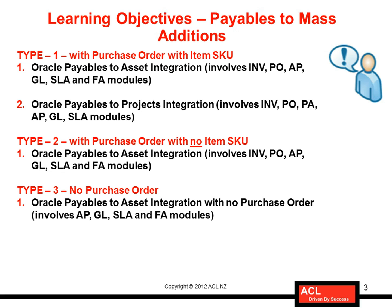The third type of flow is wherein you don't have a purchase order at all. For instance, this could be circumstances where an asset has been acquired without a purchase order or something outside the system. The supplier sends you invoices, and based on those invoices you transfer the assets to either the Fixed Assets module or the Projects module — Oracle provides both integrations. That's the third type of flow with integration between Payables and Assets.